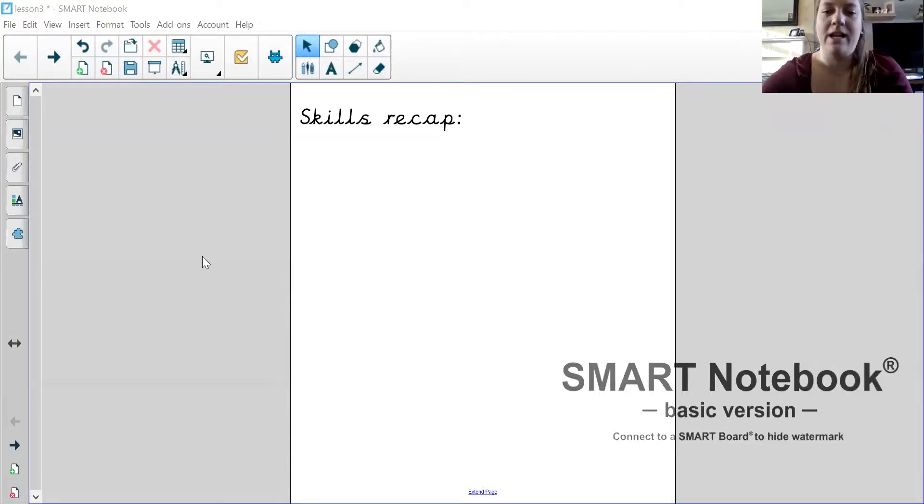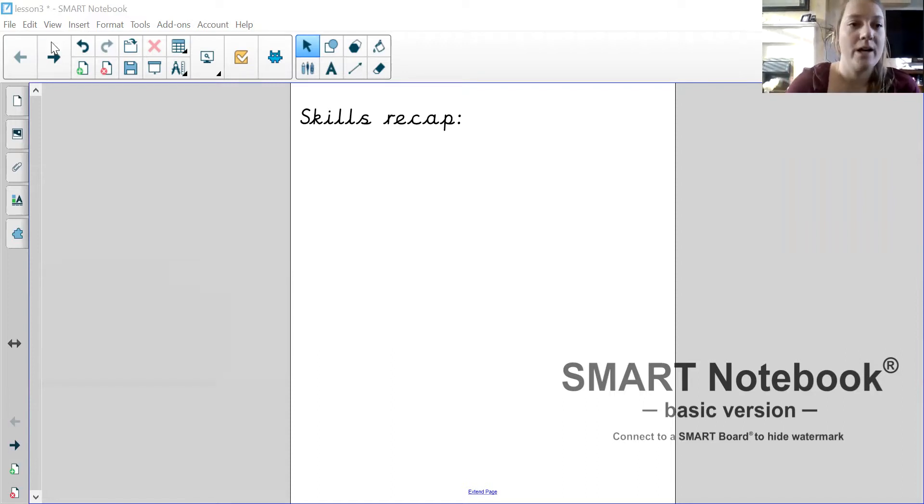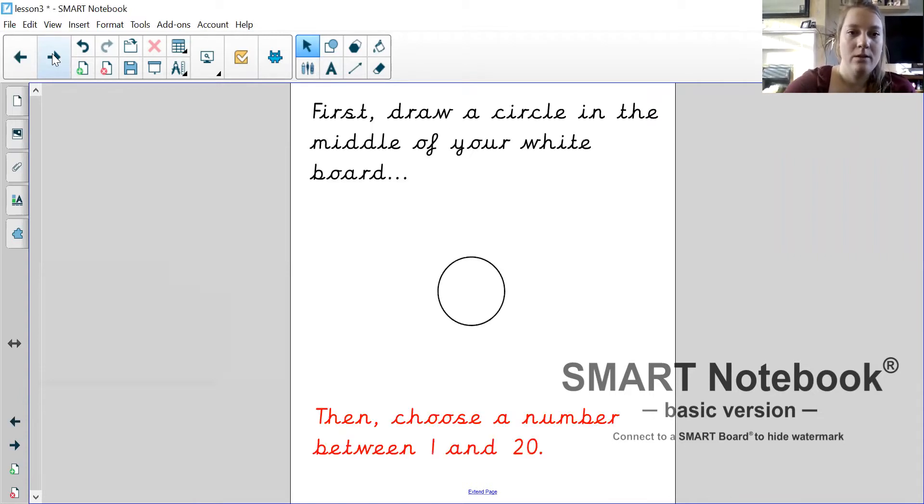Right, I hope you can see my screen. Now that you've got your whiteboard and pen, we're going to work together. So the first thing that I would like you to do on your whiteboard, right in the middle, is draw a small circle just big enough to write a number inside.